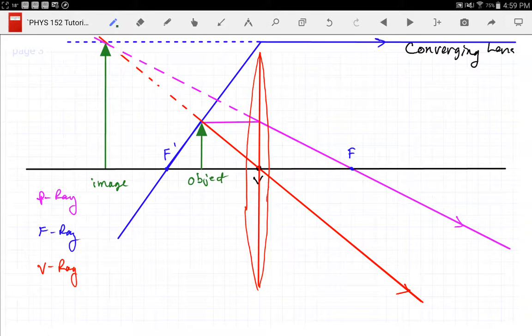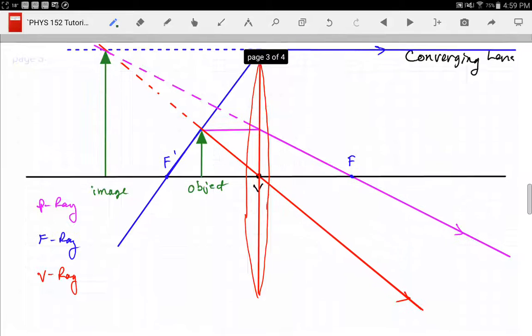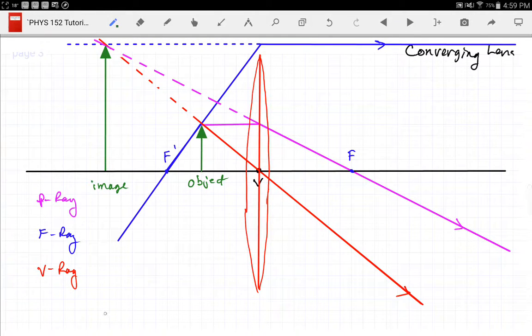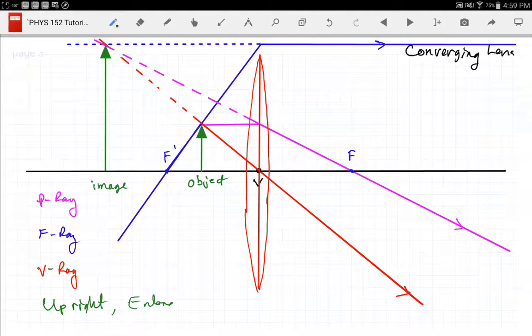Now, if I were to describe that image, that image is upright. So it's an upright. And is it enlarged? Absolutely. Enlarged. Is it real or virtual? Did the rays actually meet? On this side here where the rays were solid, nope, they didn't meet. That means it's not a real image. It was the extrapolations that met. So it's a virtual image.